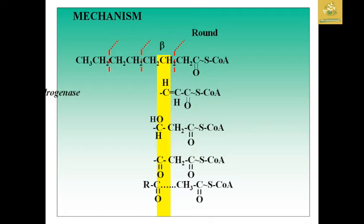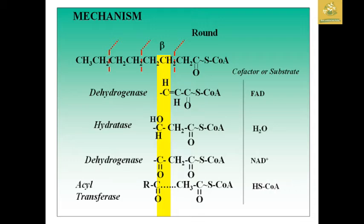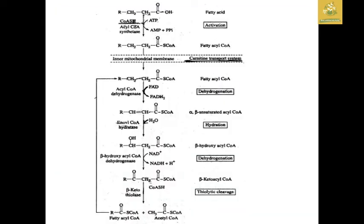The mechanism involves cuts at the beta carbon; enzymes — dehydrogenase, hydratase, dehydrogenase, and acetyltransferase — act on fatty acyl-CoA. The cofactors/substrates used are FAD and H₂O in the hydratase step, NAD⁺ in the second dehydrogenase, and HS-CoA in the final acetyltransferase step. The first fatty acyl-CoA is converted to the first acetyl-CoA. To pass through the inner mitochondrial membrane, the carnitine transport system is used.